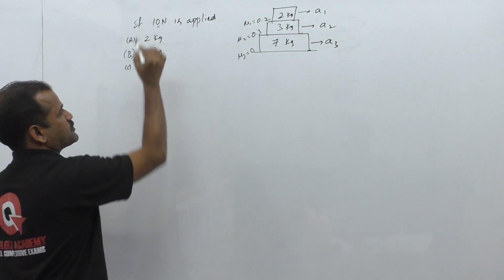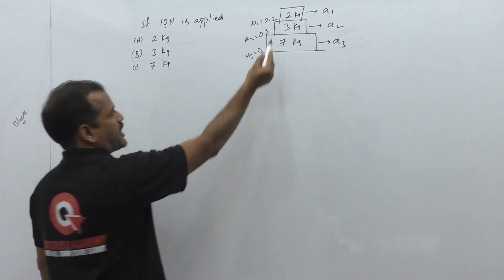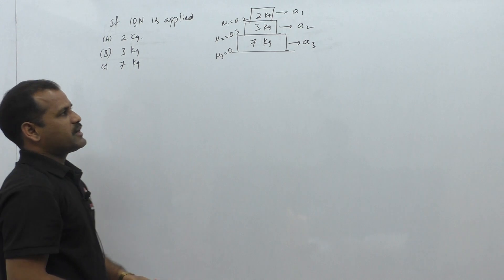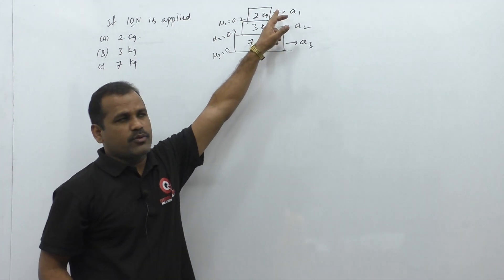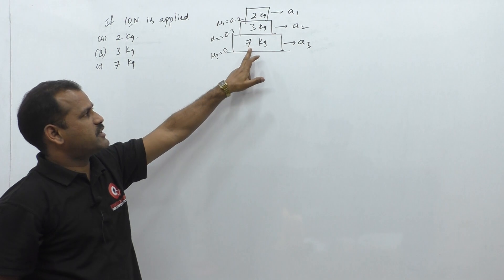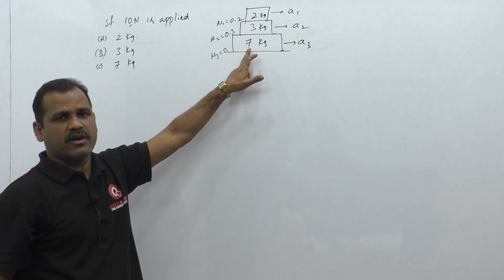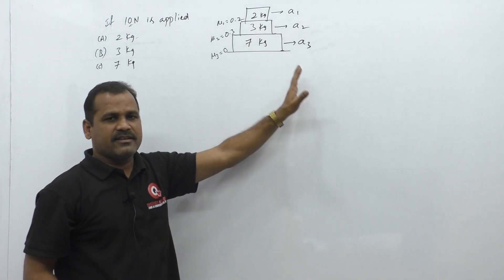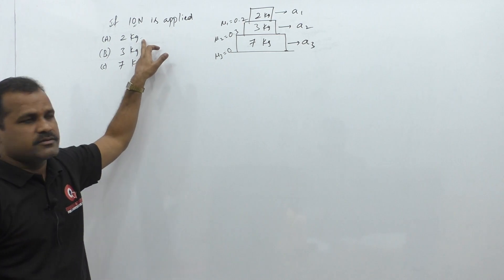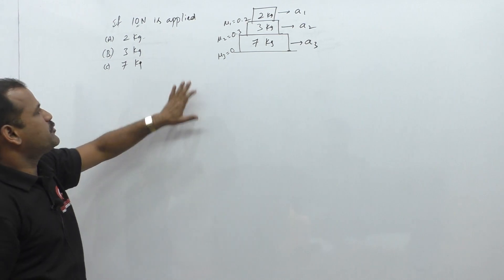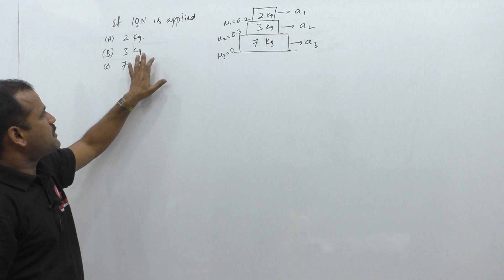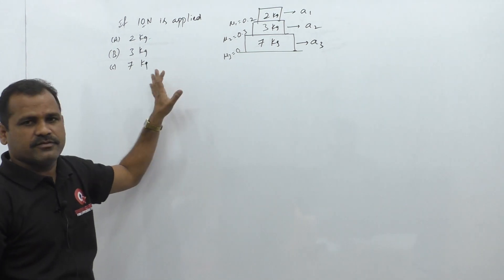If 10 newton force is applied on the 2kg block, we need to find the acceleration of the 2kg, 3kg, and 7kg blocks. Similarly, we need to find these three accelerations when 10 newtons is applied on the 3kg block and when applied on the 7kg block.